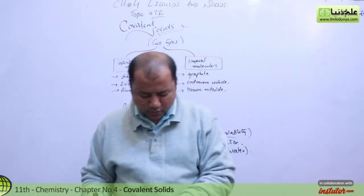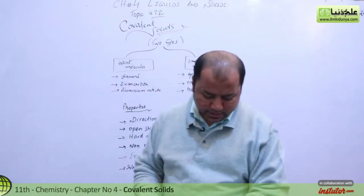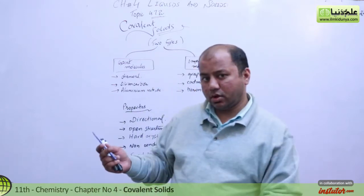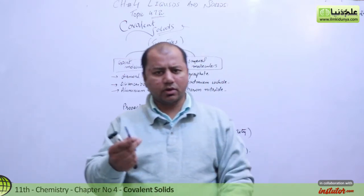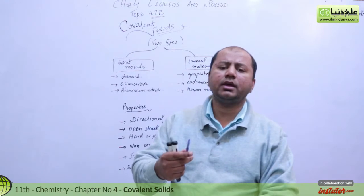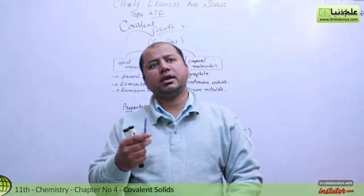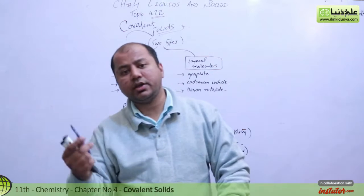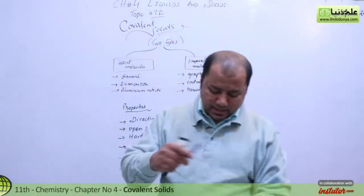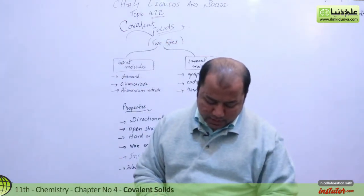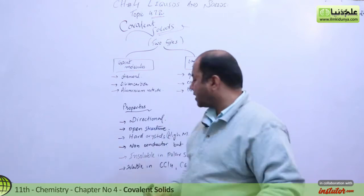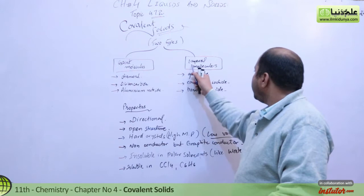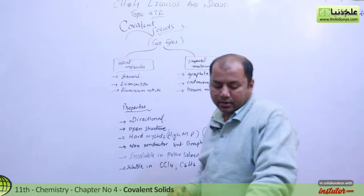Graphite is a conductor. In covalent solids there are no free electrons, which is why they are non-conductors. But graphite is a conductor because its structure is a layered molecular structure, so the electrons are available in between the layers.